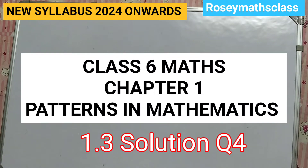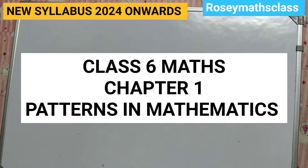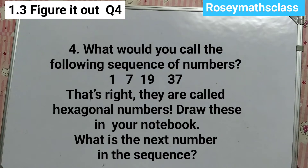Hello students, today we shall discuss question number 4 of 1.3, figure it out. The question is: what would you call the following sequence of numbers? There are four pictures given. It's 1, 7, 19, and 37.